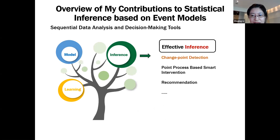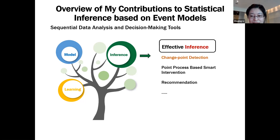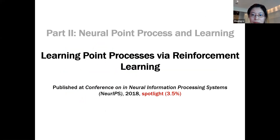To summarize, I discussed how to use the parametric multi-dimensional Hawkes process to model event data in social media and how to construct a detection algorithm on top of the point process model. Besides the detection algorithm, I'm also interested in how to perform smart interventions based on the point process model. Now let's look at a learning problem of the point process. There are new trends in modeling the intensity function with deep neural networks, which adds expressiveness to the point process model. However, for sophisticated event models, it is challenging to uncover model parameters reliably and at scale.